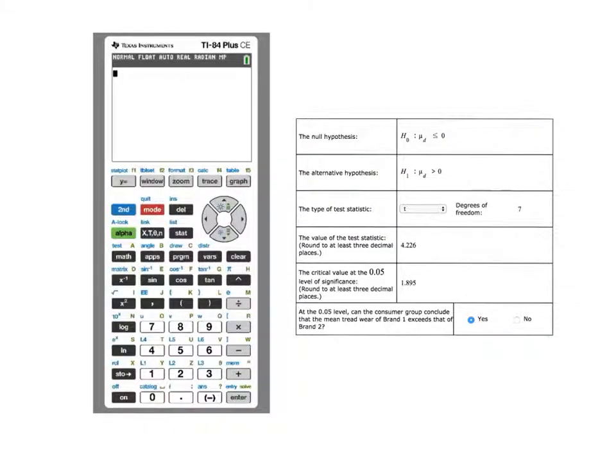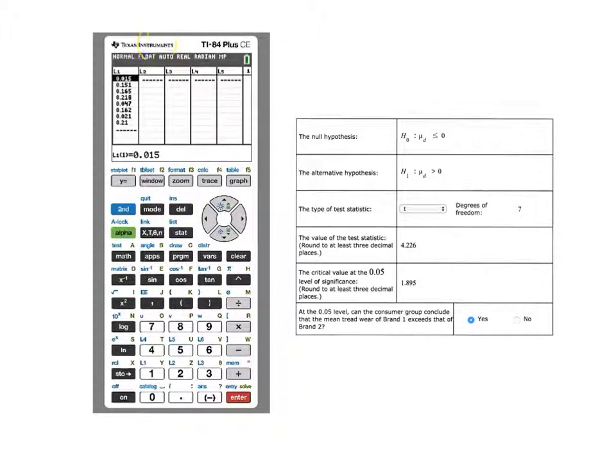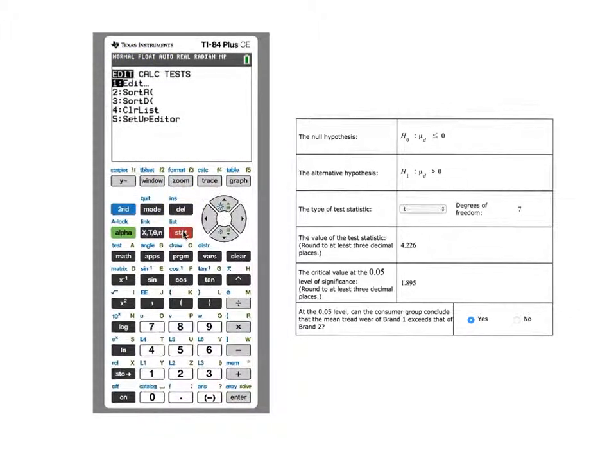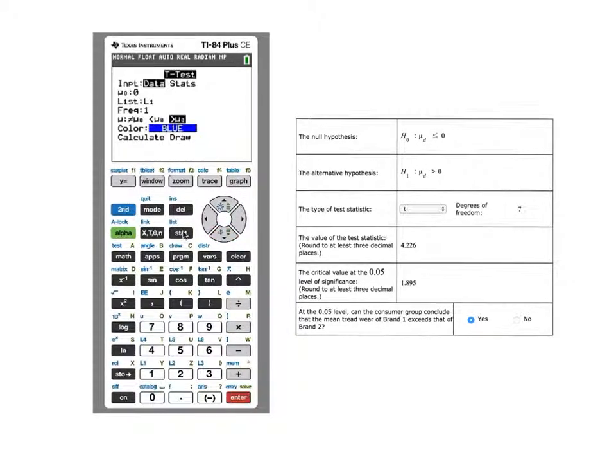Now let's take a look at our TI-84. First, I make sure my data is in one of the lists. In my case, it's in list one. Then I go to stat and choose T-test. Data is the way I'm going to run this test. I enter the information, mu sub 0 is 0, List one, frequency one, right tail test, press calculate. These are the quantities that we saw previously. This is how we come up with them.